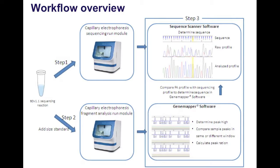Here is an overview of the overall workflow. In the first step, you would set up your regular sequencing reagents using BigDye Terminator version 1.1 chemistry and run it on your capillary electrophoresis instrument under sequencing mode. You would get sequencing data that you could read in Sequence Scanner software. You could get your raw profile shown here and your analyzed profile shown here.